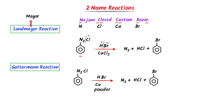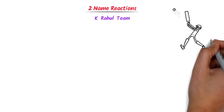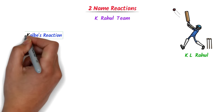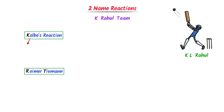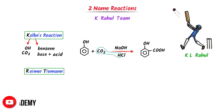Now I will teach you two more reactions. I write 'K. Rahul team,' remembering the famous cricketer KL Rahul. K stands for Kolbe's reaction and R and T stand for Riemer-Tiemann reaction. In Kolbe's reaction, O stands for OH and CO2, B stands for benzene and base plus salt. I attach OH to a benzene ring to get phenol, then write CO2. The base is NaOH and the acid is HCl. I attach COOH to the benzene ring and get salicylic acid. This is Kolbe's reaction.